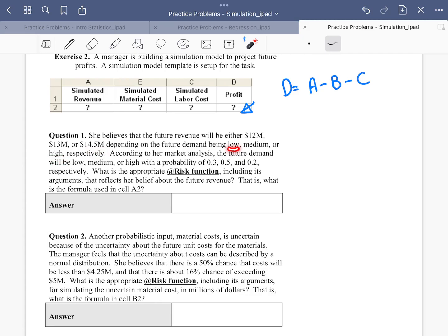If the demand is low, the revenue is going to be low as well. So she has done some market analysis, and she found out the probability of having a low demand is 30%, for medium demand is about 50%, and for high demand is 20%. So we were asked to simulate revenue here.